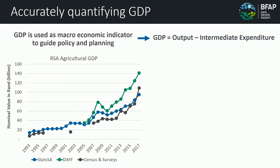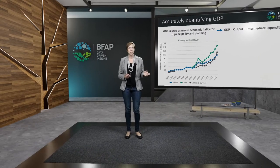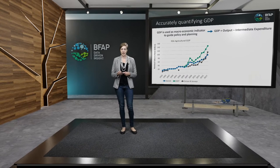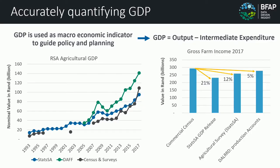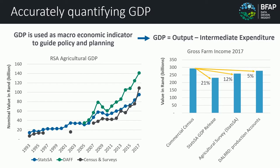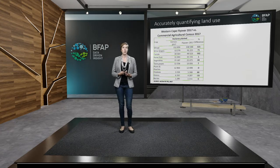Already you can see these are all lines trying to estimate gross domestic product generated by the agricultural sector, and we've got just different trends going over time. Another way to show this discrepancy is to look at one year. On the right-hand side, we've got the gross farm income in 2017, and if we assume the census of commercial agriculture is the most recent and up-to-date number, then comparing that to other sources, we are underestimating gross farm income by up to 21%, which amounts to 50 to 70 billion rand. So the discrepancy can be quite large.